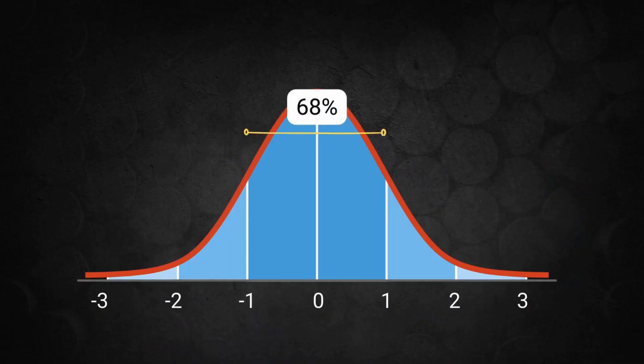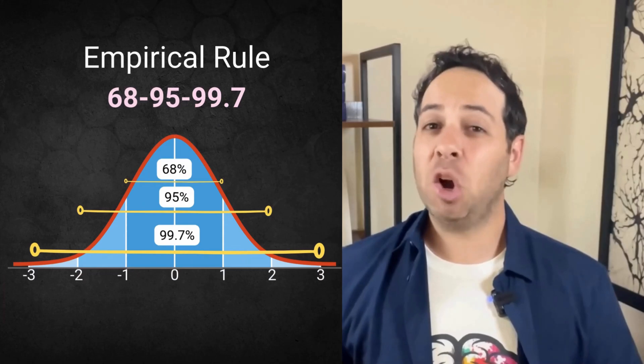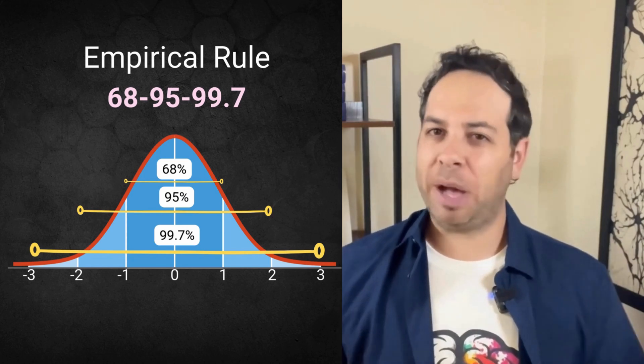Here's where it gets statistically satisfying. 68% of the scores fall within one standard deviation of the mean, 95% fall within two standard deviations, and 99.7% fall within three standard deviations. This is known as the 68-95-99.7 rule. Your new best friend when you see a bell curve.